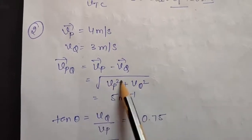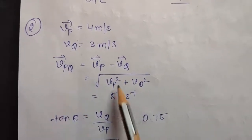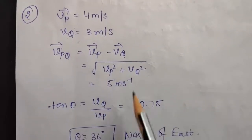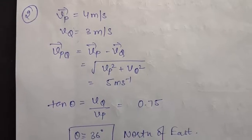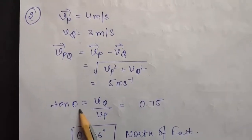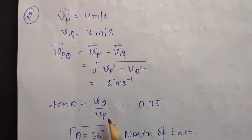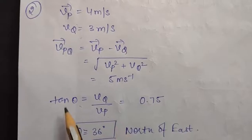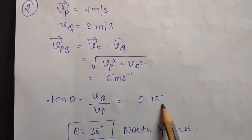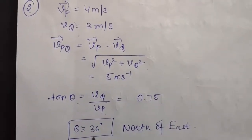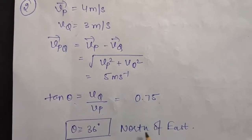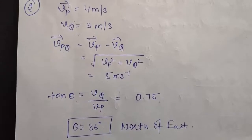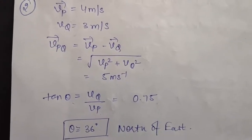This will be the magnitude of this vector. When you put in the values and solve it you will get 5 m/s. To calculate the direction, we calculate tangent theta again as we did in the first question — that will be vq upon vp. Put the values and solve; this will come to be 0.75. So theta will be tangent inverse of 0.75, or approximately 36 degrees north of east. This will be the velocity of P with respect to Q.